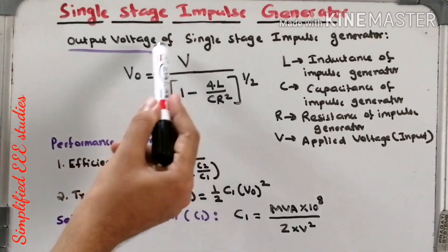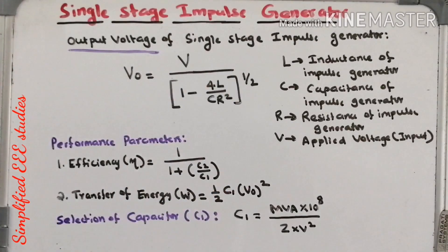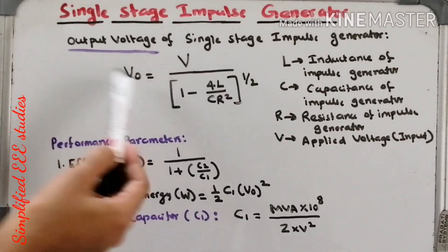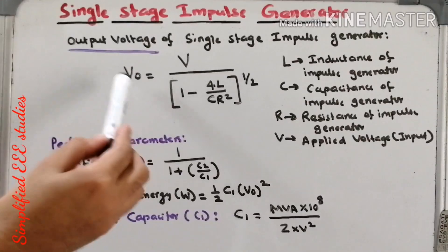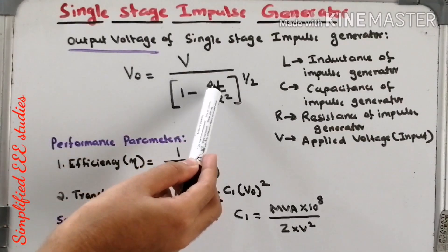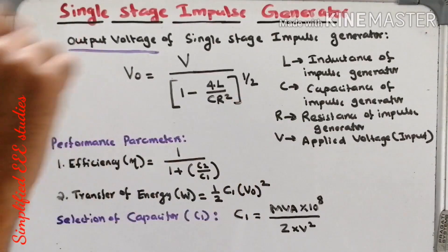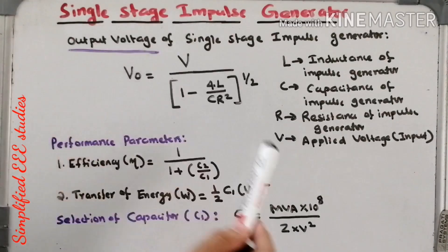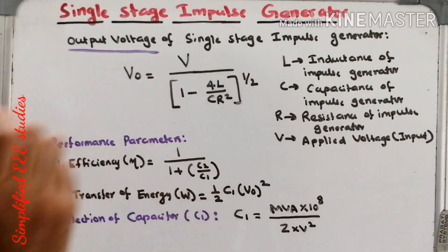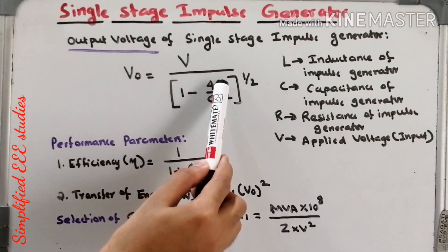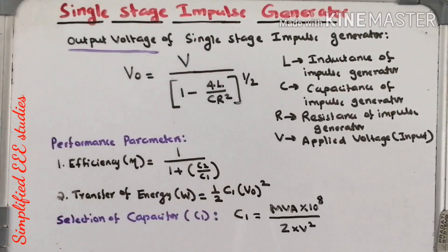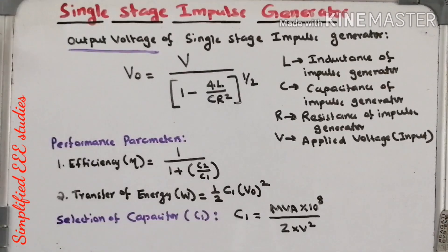We can calculate the output voltage of single stage impulse generator. The formula is: V₀ = V / (1 - 4L / CR²)^(1/2), where V₀ represents output voltage as a function of time, V is the applied DC input voltage, L is the inductance, C is the capacitance, and R is the total equivalent resistance of the given circuit. By using this formula, it is possible to calculate the magnitude of voltage generated from the impulse generator.